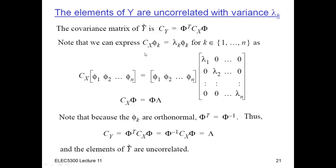When we apply C_X to each column of Φ, we get λ₁ times φ₁ for the first column, λ₂ times the second, and so on down to λ_n times the last. So each column of the product C_X·Φ is just λ_k times φ_k, and this is just the compact matrix equation summarizing all of those eigenvector conditions.